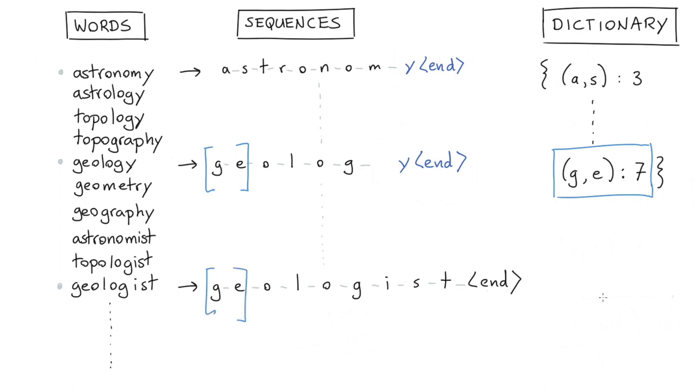Now if we repeat this a whole bunch of times, odds are that because geo occurs very often in our word list that we might get this single token that represents geo, and you might similarly also imagine that we have something like ist with an end token.